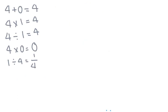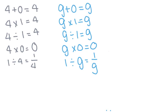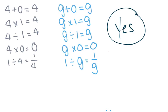Now, what if we replaced the number 4 with the letter G? Let's replace all the 4s in our expressions with the letter G. So now our expressions read: G plus 0 equals G; G times 1 equals G; G divided by 1 equals G; G times 0 equals 0; and 1 divided by G equals 1 over G. Are all of our new statements true except for when G is equal to 0 when dividing? Yes, all of these expressions are true except for when G equals 0 when dividing.